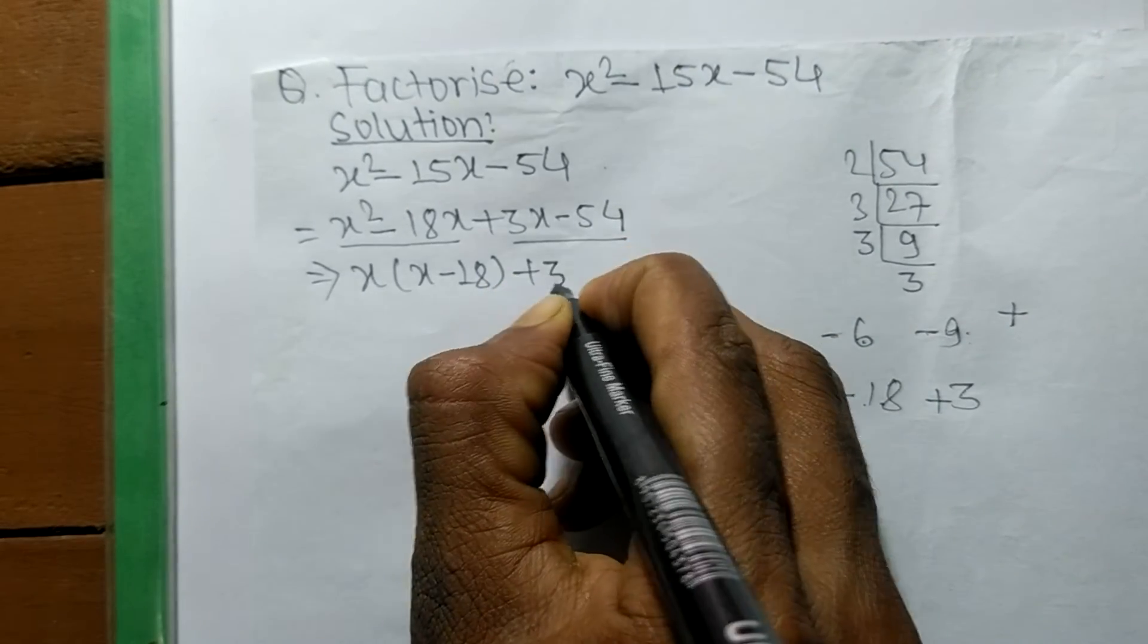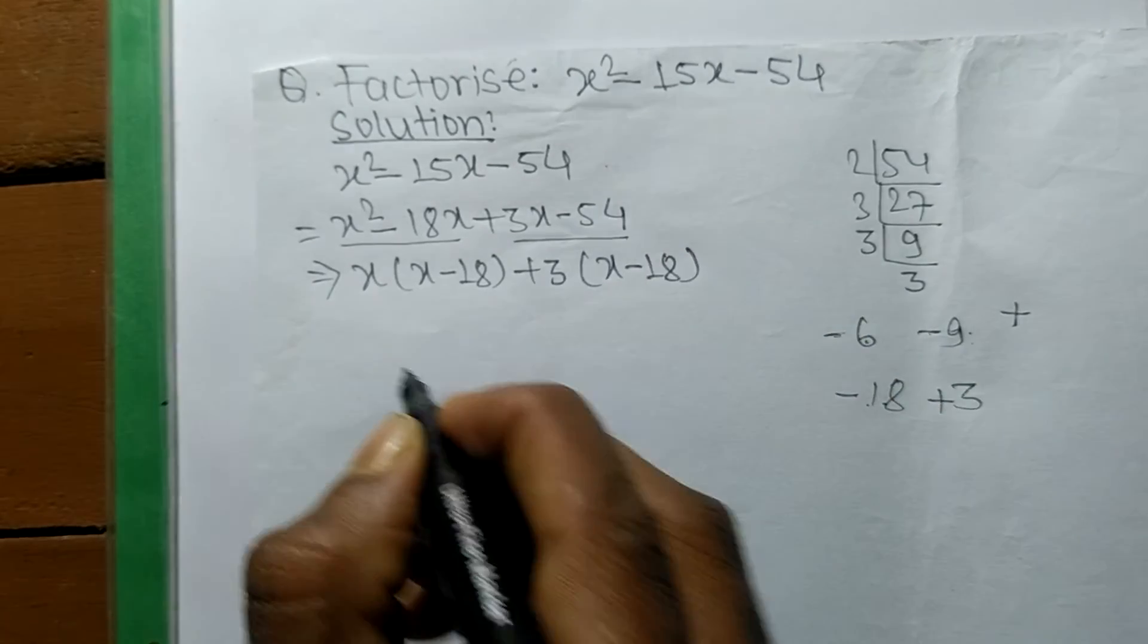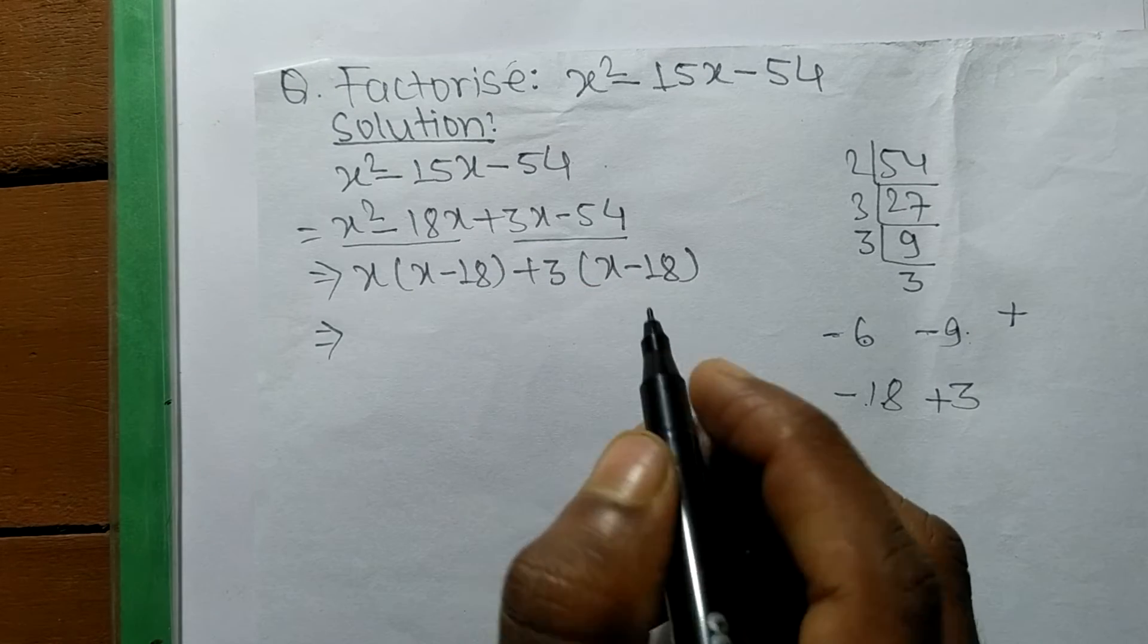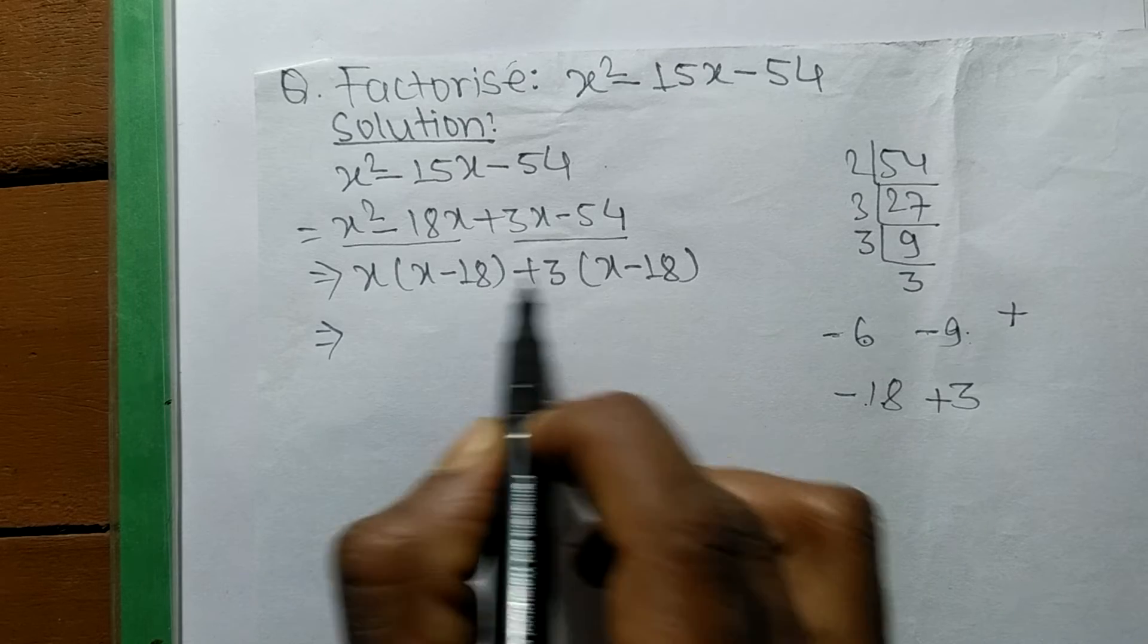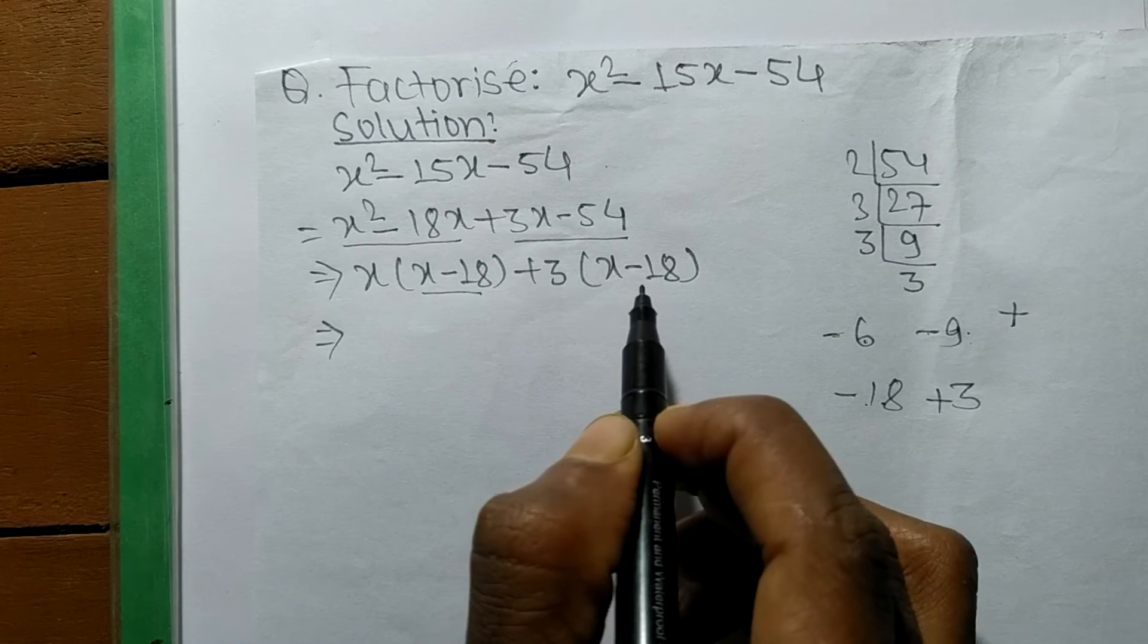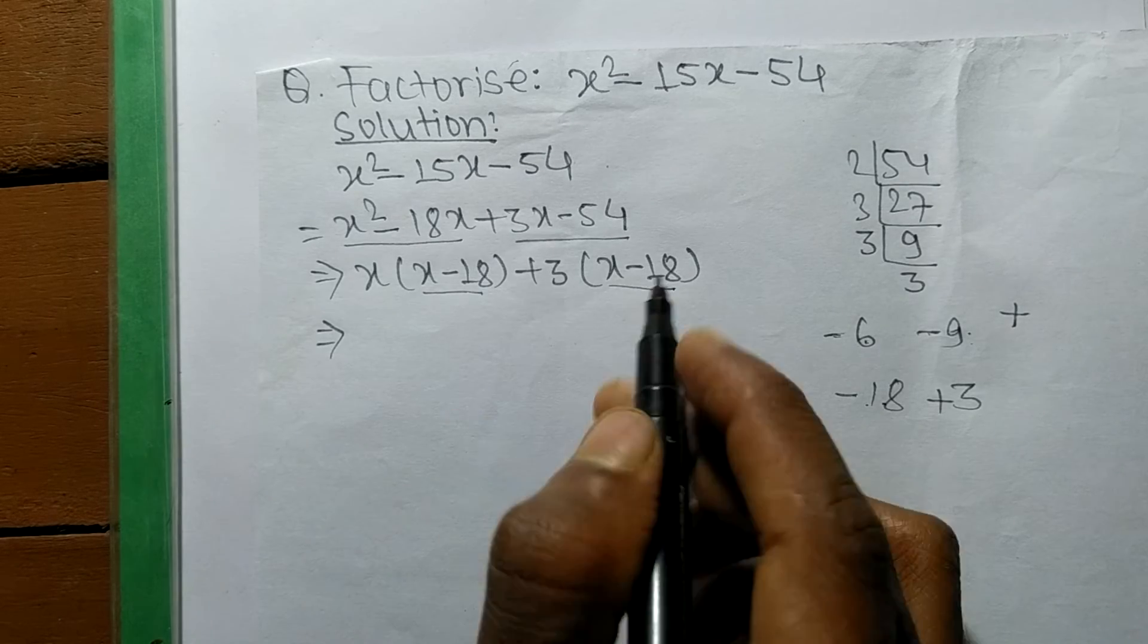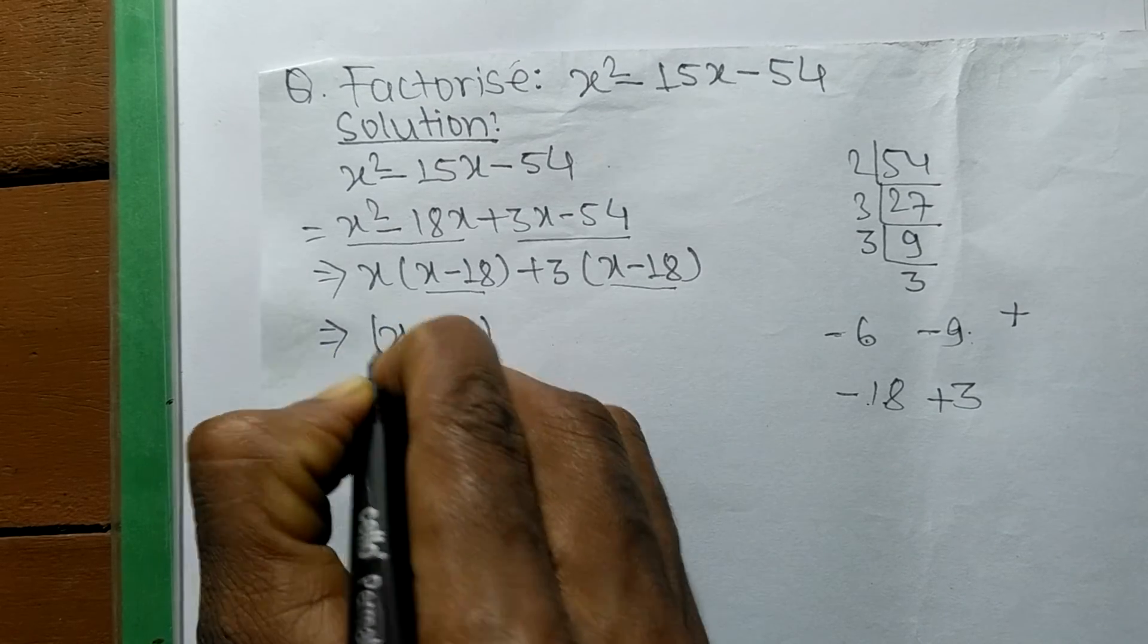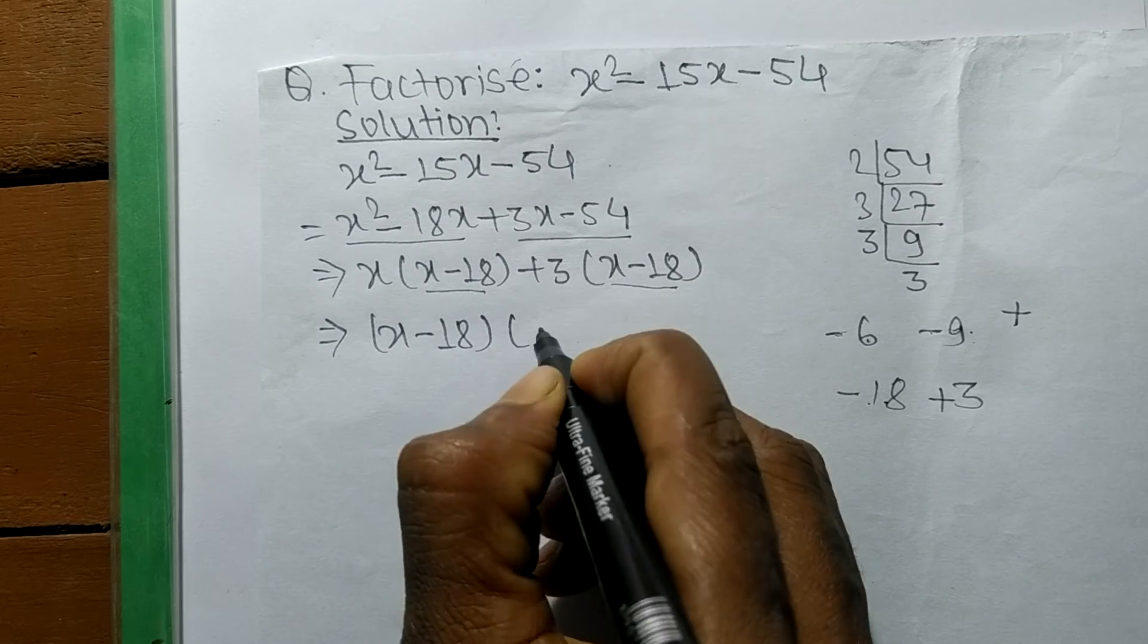We got the common in both pairs, so now we find the common binomial. Both have x - 18 as a factor. The common is x - 18, and the remaining terms are x and +3.